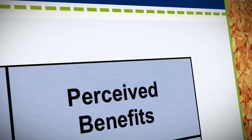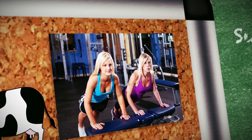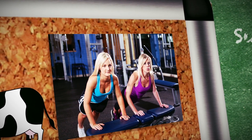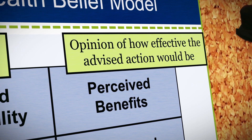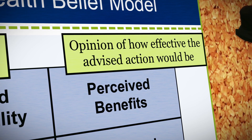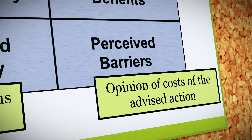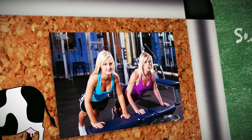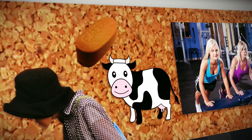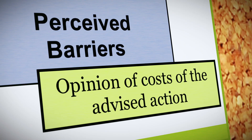Perceived benefits refers to your opinion of how effective the advised action would be. For example, you may be advised that weight-bearing physical activity and appropriate calcium and vitamin D intake in the context of an overall healthy diet would promote bone health and reduce your chance of developing osteoporosis. Perceived barriers refers to your opinion of the costs or drawbacks of the advised action — perhaps you don't like exercise, find it hard to fit into your day, don't like dairy products, or can't afford supplements or sufficient healthy food. These would all be barriers to undertaking the recommended action.